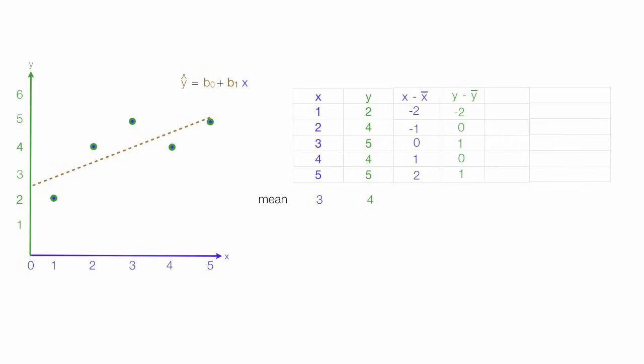So we take this column, x minus x-bar, and we square it. We take all these values and we square them all. Negative 2 squared is 4. Negative 1 squared is 1. 0 squared is 0. 1 squared is 1. And 2 squared is 4.